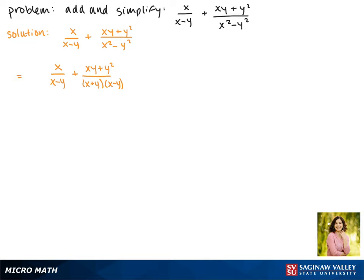Now we see that the first term is missing a factor of (x+y), so we multiply by (x+y) on the top and bottom. This gives us x(x+y)/(x+y)(x-y).